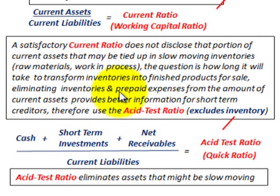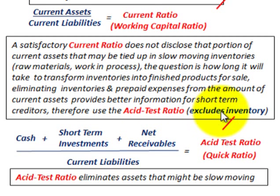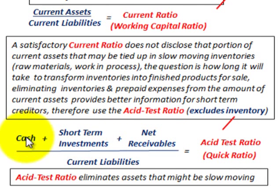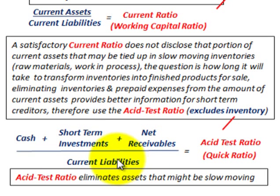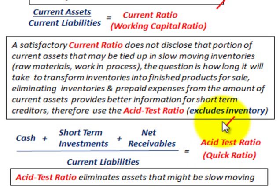Eliminating inventories and prepaid expenses from current assets provides better information for short-term creditors. Therefore, we use the acid-test ratio, also referred to as the quick ratio, which excludes inventory. We take cash plus short-term investments plus net receivables, and divide by current liabilities. This eliminates the slow-moving assets like inventory and prepaid expenses.